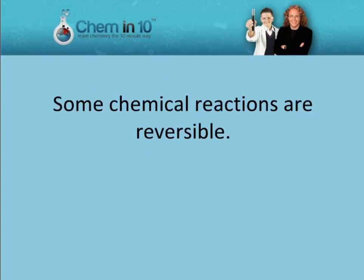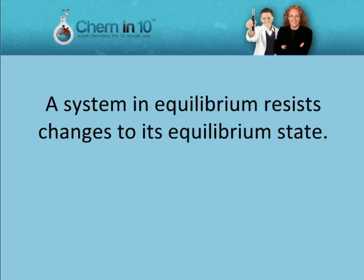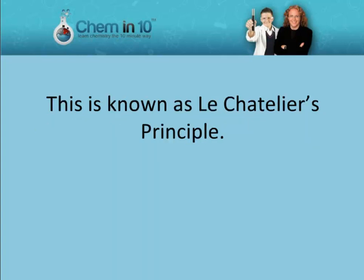Some chemical reactions are reversible. In such cases, when the rate of the forward reaction is equal to the rate of the reverse reaction, the reaction is said to be in equilibrium. A system in equilibrium resists changes to its equilibrium state. This is known as Le Chatelier's principle.